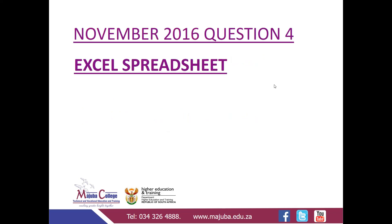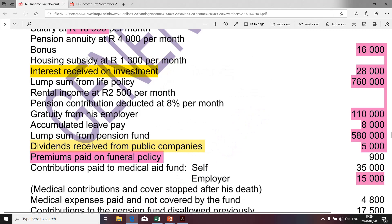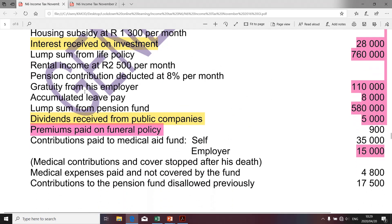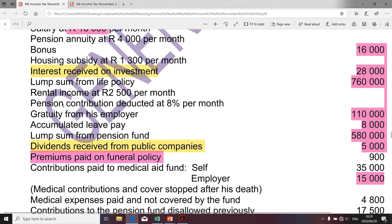Now let's go to question four and apply section 11F. We want to determine a deduction that will be granted by section 11F, specifically relating to the pension contribution. We didn't have any other contributions associated with retirement — no provident fund and no retirement annuity fund for this taxpayer. So we are simply going to limit section 11F to that pension item.